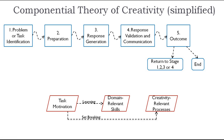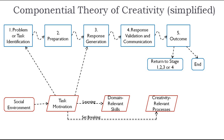Task motivation is related to domain-relevant skills and creativity-relevant skills — in order for a person to engage in enhancing either of these components, the person first needs to have the motivation to do so. Task motivation can also be influenced by external factors, including the social or surrounding environment. Task motivation influences stage 1 and stage 3 of the creative process. Domain-relevant skills only influence stage 2, preparation. The creativity-relevant process influences stage 3, response generation, which primarily relates to the generation of solution ideas to resolve the problem being faced. For a person to come up with ideas which may be considered creative, it therefore makes sense that this would be directly influenced by creativity-relevant processes.